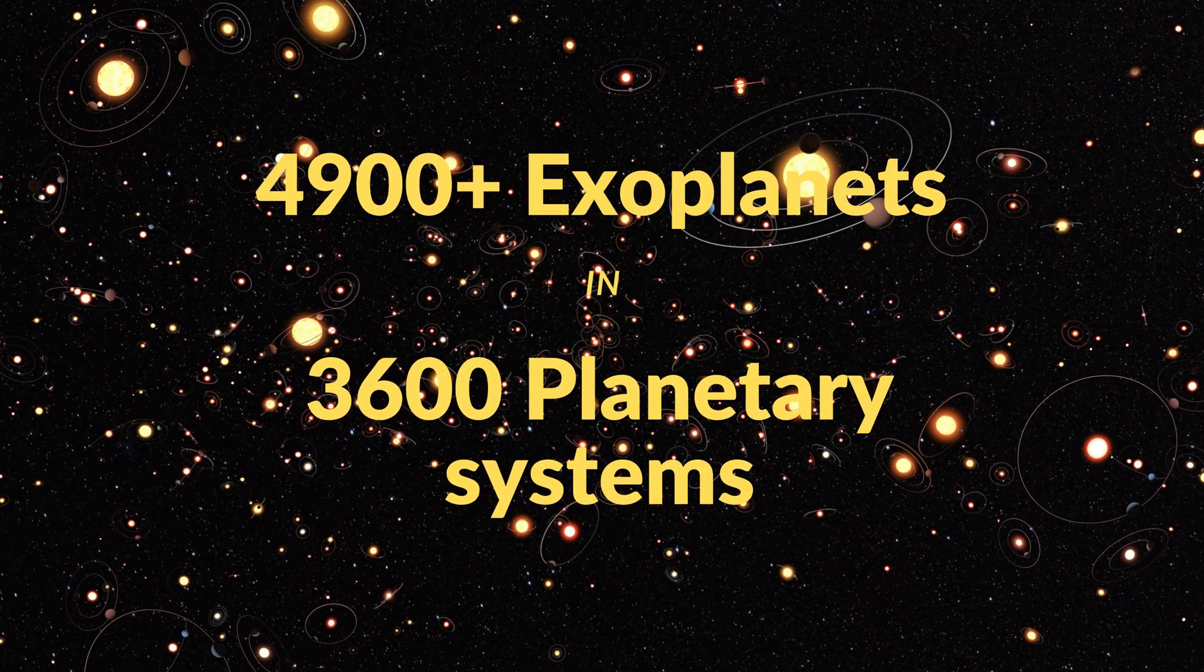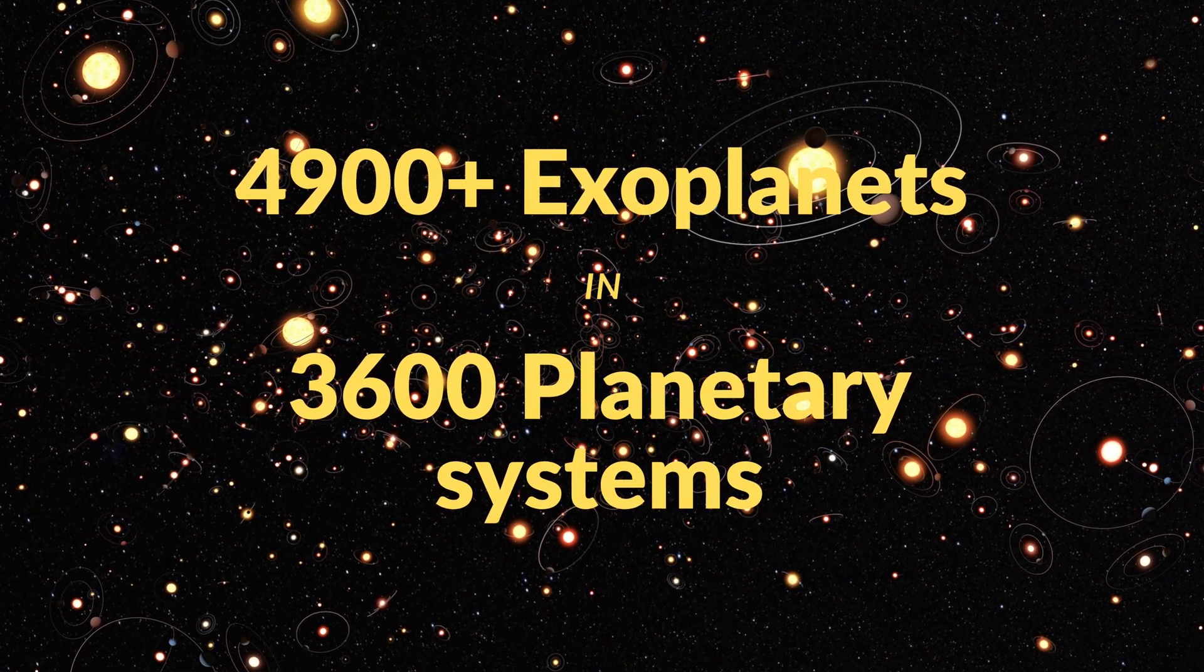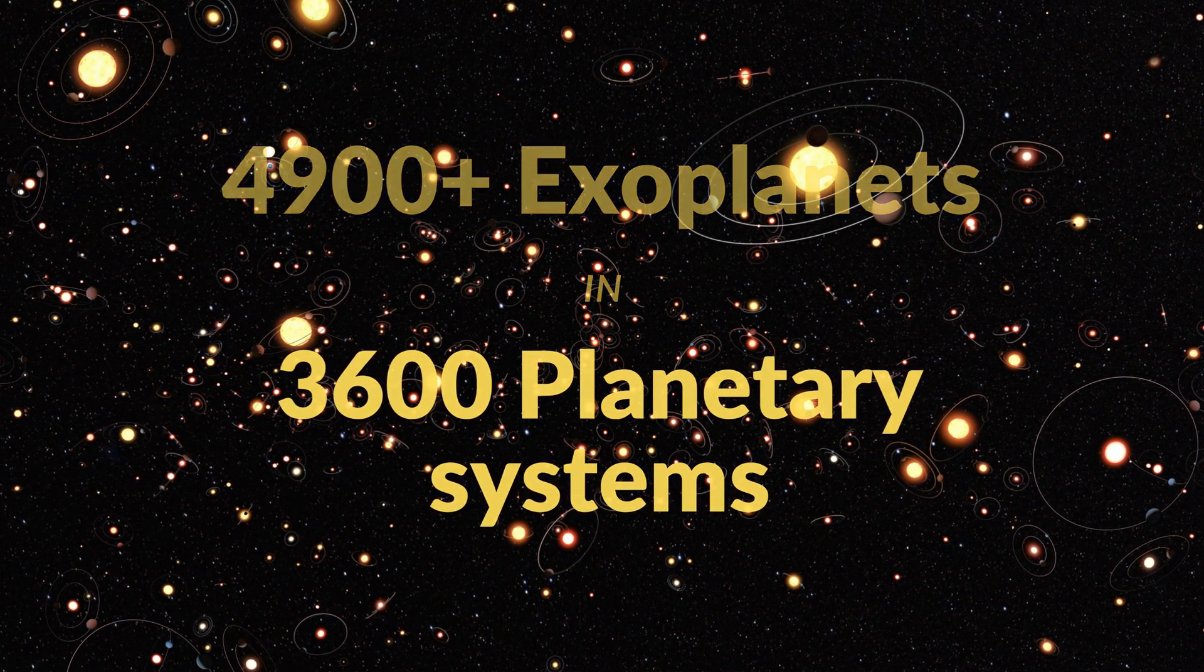There are more than 4,900 confirmed exoplanets in more than 3,600 planetary systems.